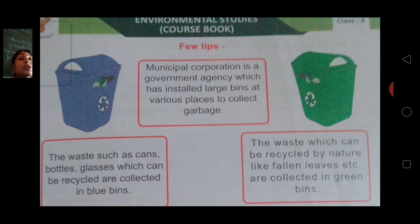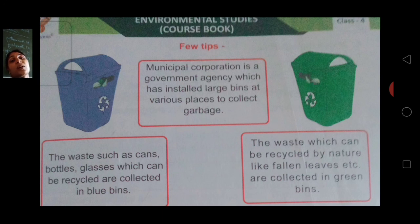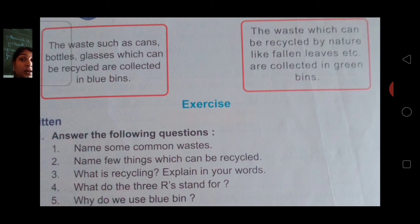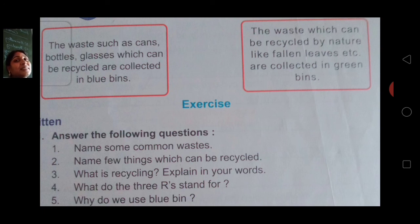So waste that can be recycled by nature should be put in the green dustbin, and materials like canes, bottles, and glasses which can be recycled by us should go in the blue bin — jo humaare dvara ho sakta hai usko hum blue bin mein daalenge. I hope you all understood the recycling process and how different types of things are recycled. Now let's start to reuse and recycle the things around us.